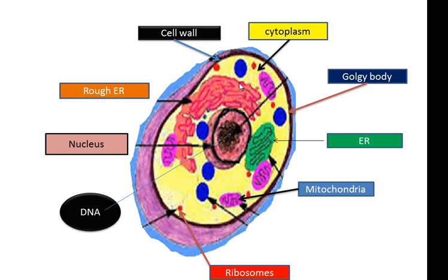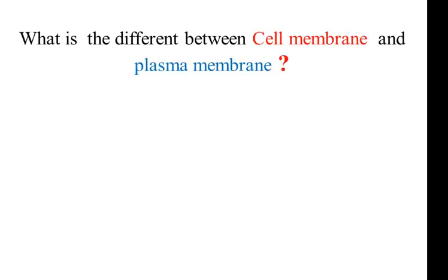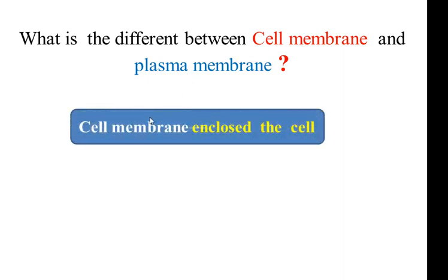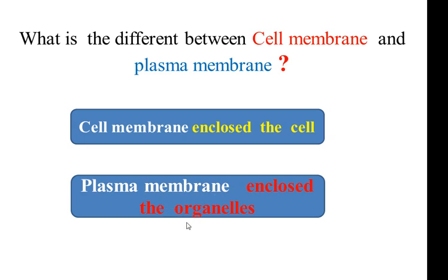Now we want to speak about the cell membrane. If anyone asks you the difference between the cell membrane and the plasma membrane: the cell membrane encloses the entire cell, while the plasma membrane encloses individual organelles such as the ribosome, nucleus, and mitochondria — all these organelles are enclosed by plasma membranes, while the whole cell is enclosed by the cell membrane.